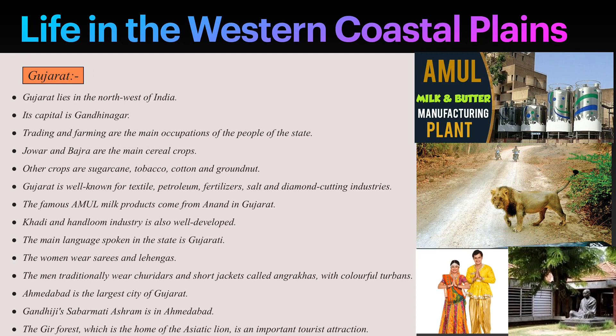Gujarat has several well-developed industries like textiles, petroleum, fertilizers, diamond cutting, and handloom industries. Dairy farming is also an important industry in Gujarat. The famous Amul milk products come from Anand in Gujarat. The main language spoken in the state is Gujarati, and women wear sarees and lehengas while men traditionally wear churidars or dhoti with short jackets or angarakhas.